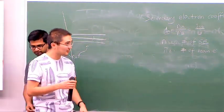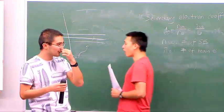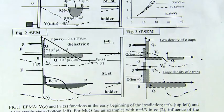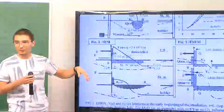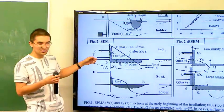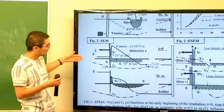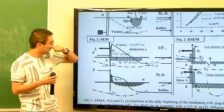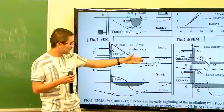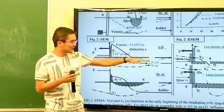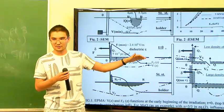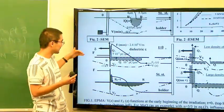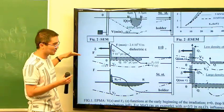For SEM it's a little different. In EPMA you had a conductive layer, but for SEM you don't have a conductive layer. What happens is your primary electrons penetrate the sample. At time equal to zero, electrons penetrate and it builds up a negative charge because negative charges accumulate and positive charges move to the surface, causing your primary electrons to slow down.